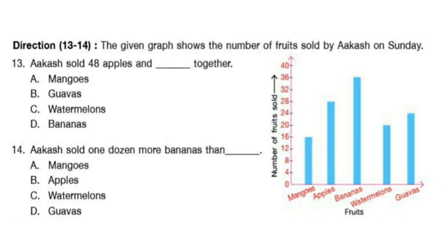Question 14. Akash sold one dozen more bananas than another fruit. How many bananas did he sell? The number is 36, and one dozen is 12, so 36 minus 12 gives 24. He sold 24 guavas, so the answer is option D: guavas.